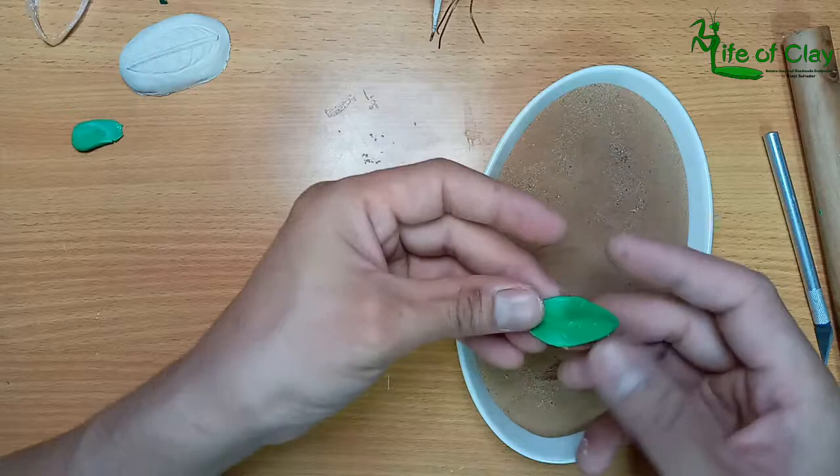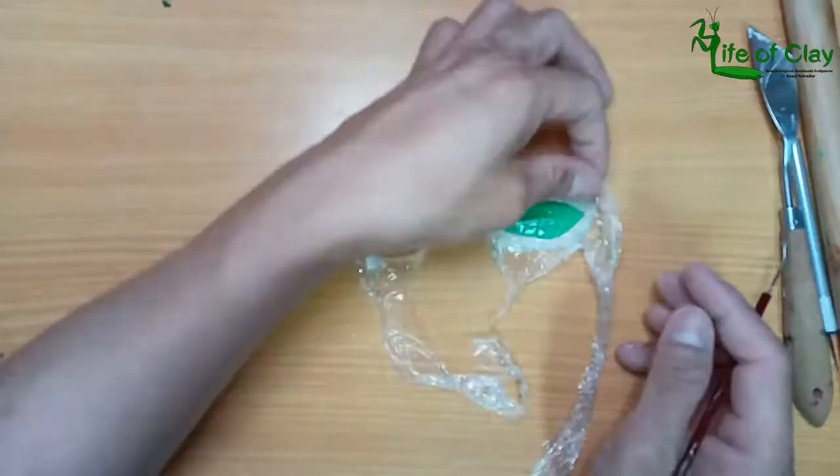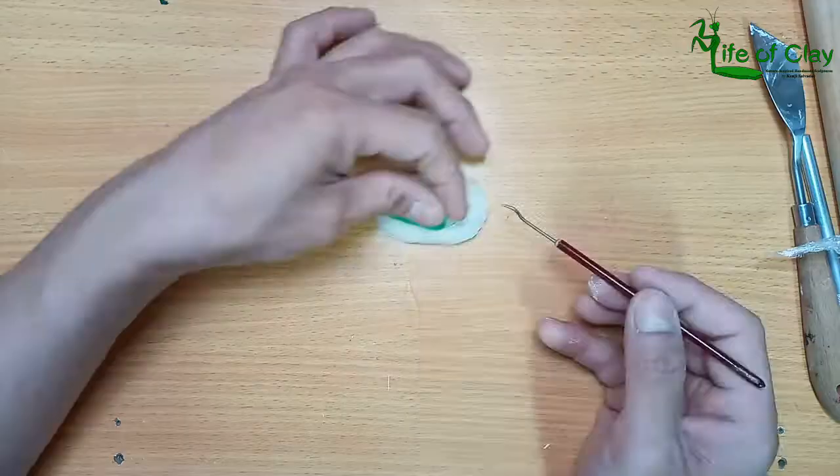I used the same procedure but this leaf is twisted so I'm twisting it using a brush handle. And after that, it's time to bake them.